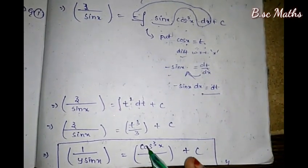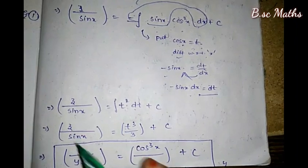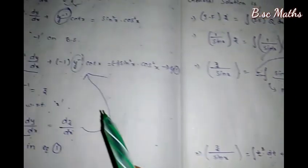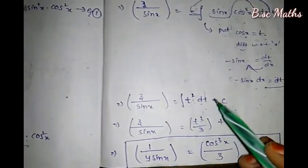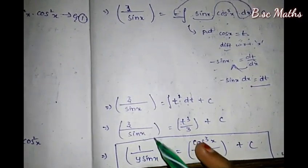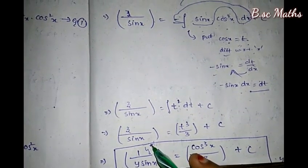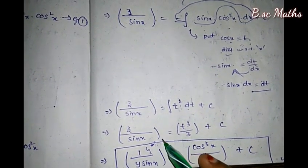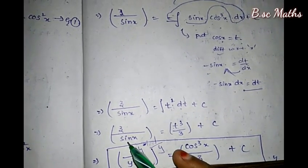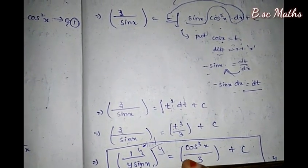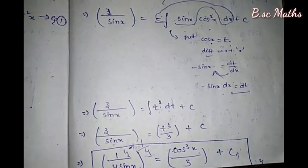We have cos³x divided by 3. Using z equal to y inverse, we get: 1/(y·sin x) = cos³x/3 + c. This is the answer.